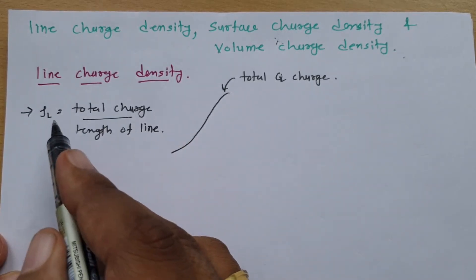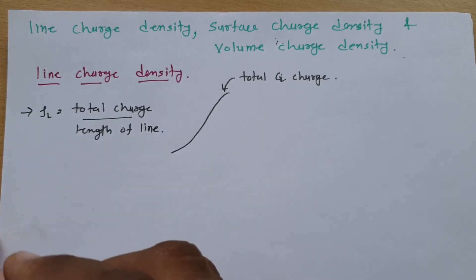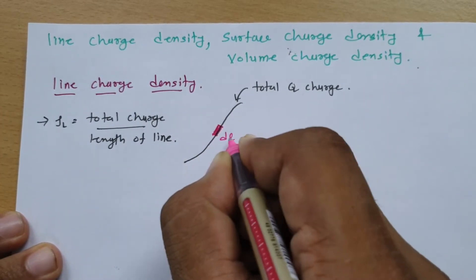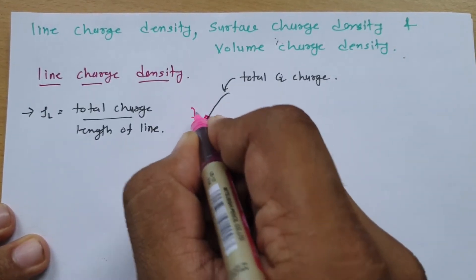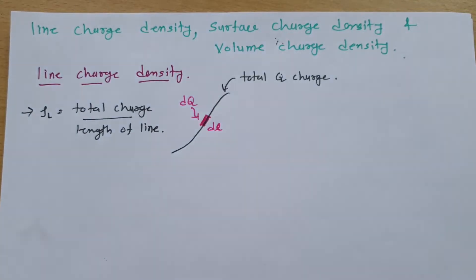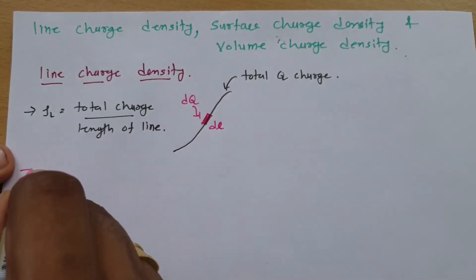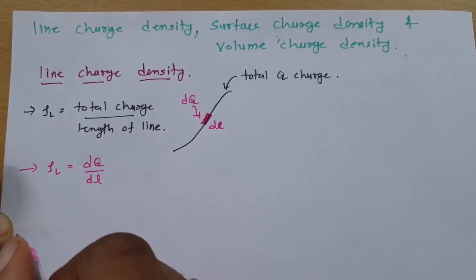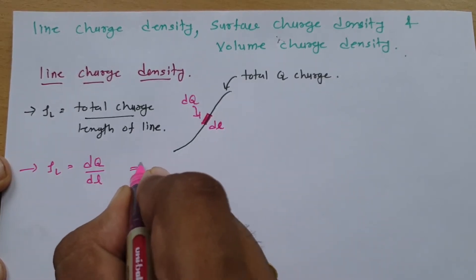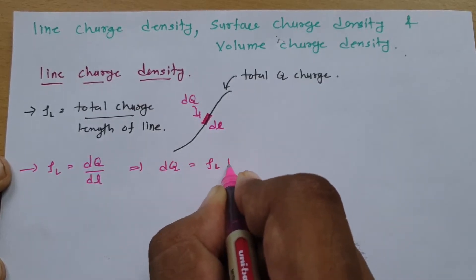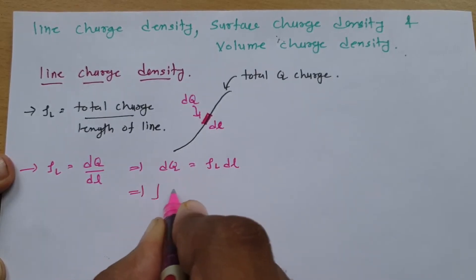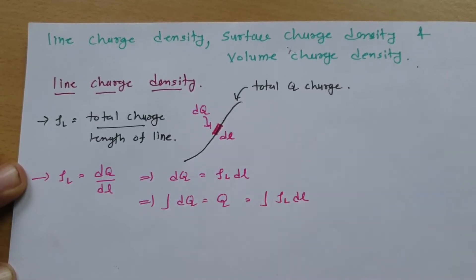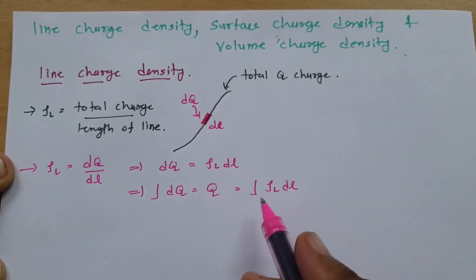But sometimes the charge distribution is a function of coordinates. In that case, we consider a small differential length dL out of the wire. If dQ amount of charge is induced on this differential length, then line charge density ρL = dQ/dL. To calculate total charge, we rewrite this as dQ = ρL dL, and the total charge is the line integration of line charge density.